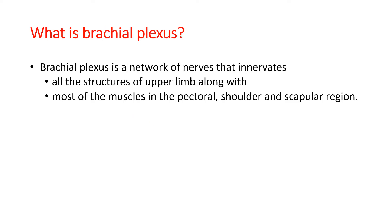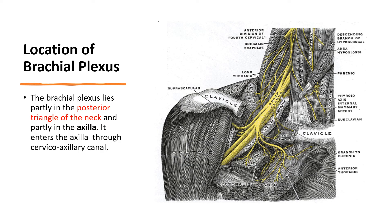What is brachial plexus? Brachial plexus is a network of nerves that innervates all the structures of the upper limb along with most of the muscles in the pectoral, shoulder, and scapular region. Part of the brachial plexus is located in the posterior triangle of the neck and part of it lies in the axilla.